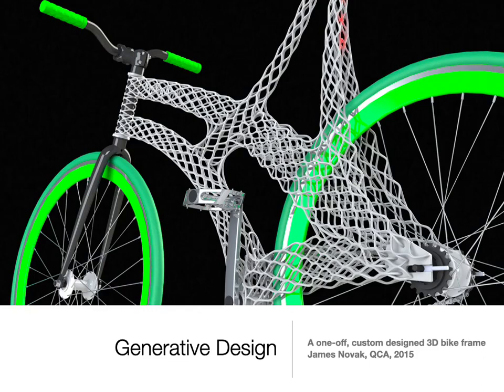Generative Design. Generative processes are increasingly used in design disciplines, from architecture to product design and fashion design. Often called parametric design because automatic changes are made to the parameters or variables of a software specification. The use of algorithmic processes in design has been applied to achieve optimisation as much as it has been applied to achieve new ideas.